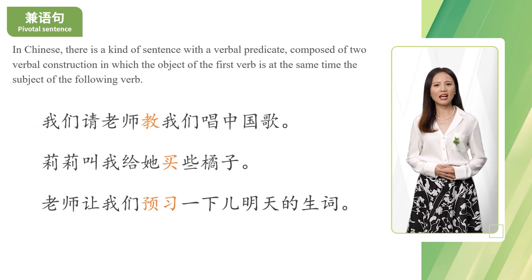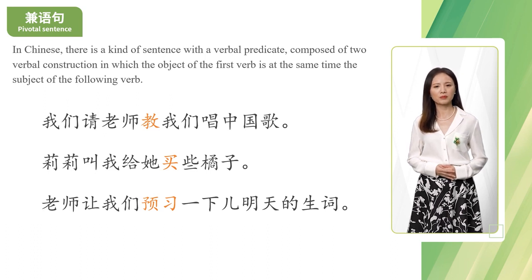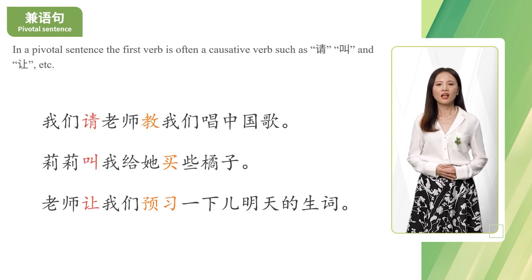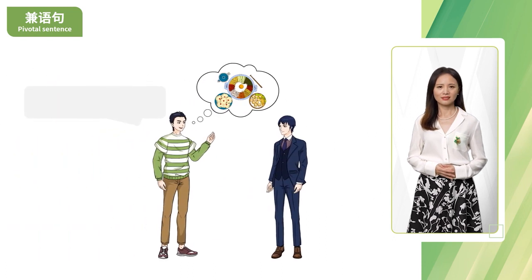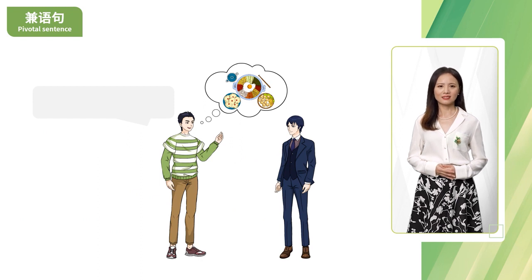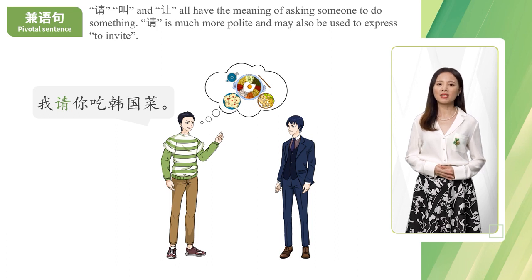In Chinese, there is a kind of sentence with a verbal predicate, composed of two verbal constructions in which the object of the first verb is at the same time the subject of the following verb. In a pivotal sentence, the first verb is often a causative verb such as 请、叫 and 让. Let's look at this sentence: 我请你吃韩国菜。请、叫 and 让 all have the meaning of asking someone to do something. 请 is much more polite and may also be used to express 'to invite'.